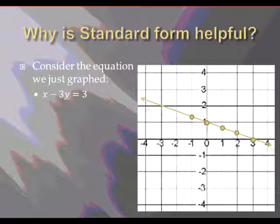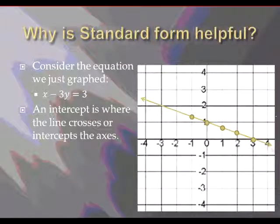So the equation was x plus 3y is equal to 3. The idea we're going to apply here is called an intercept. An intercept is where the line crosses or intercepts with the axes. Remember, there's two axes. You have the x-axis, which runs left to right, and you have the y-axis, which runs up and down.